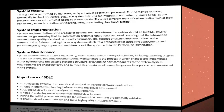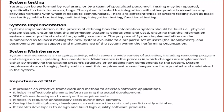System testing can be performed by real users or by a team of specialized personnel. Testing may be repeated specifically to check for errors and bugs. The system is tested for integration with other products as well as any previous versions it needs to communicate with. Types of system testing include black box testing, white box testing, unit testing, integration testing, and functional testing.